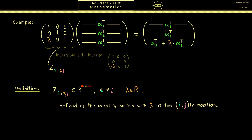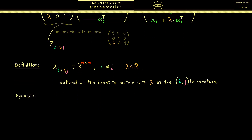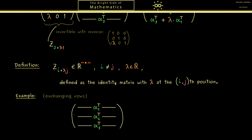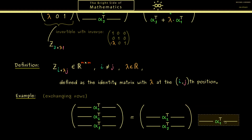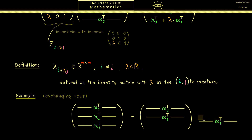This is the most important row operation, but I also want to discuss two more. The next one is about exchanging rows. Let's look at a lower dimensional example with three rows again, and describe how we can exchange the first row with the third row. This can be very helpful if the order of the rows is not good for us.